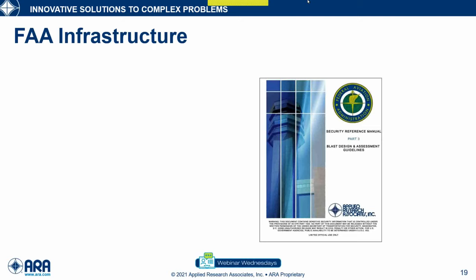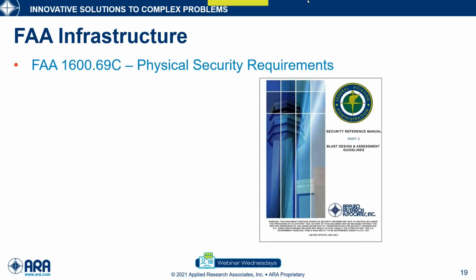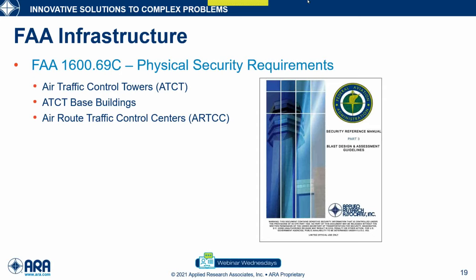Looking at FAA infrastructure: FAA follows 1669C physical security requirements. We actually worked with FAA to develop these blast design and assessment requirements — both the original 1669C and all subsequent updates. This applies to air traffic control towers, air traffic control tower base buildings, and air route traffic control centers.